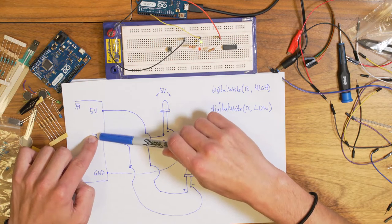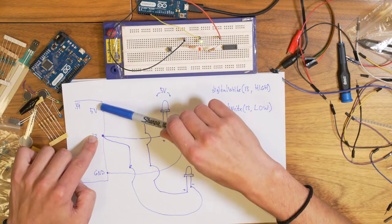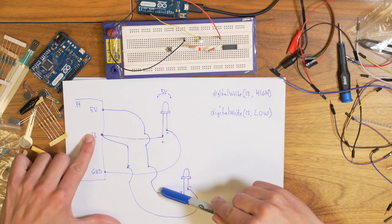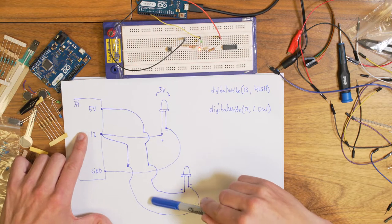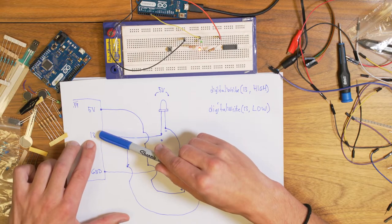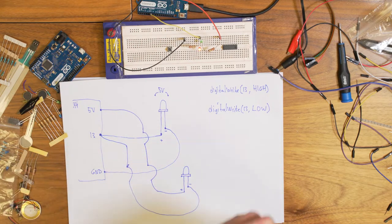So there will be a voltage across these two. And the current, the electricity will flow from here to the plus side of the LED, light it up and go back to 13. When this one goes high, this one will get the value of five volts.